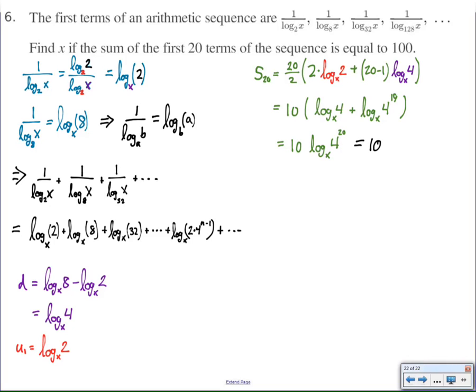We were told in the beginning of the problem that the sum, this is the sum, this log expression right here, of the first 20 terms is equal to 100. Therefore, 10 times the log base x of 4 to the 20th power is equal to 100. I'm going to divide both sides by 10. Rather than making the powers bigger, I'm going to make the numbers smaller. And then we can see that if we have 10 is the exponent on x that gives me 4 to the 20th power. 10 is the exponent on x that gives me 4 to the 20th. Solve for x by taking the 10th root of both sides, if you will, and you get x equals 4 squared, or 16.